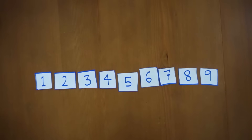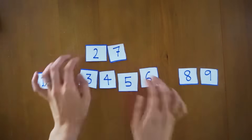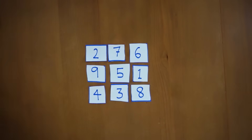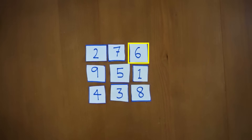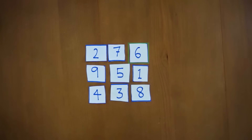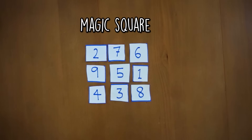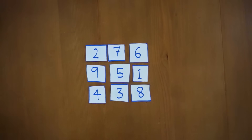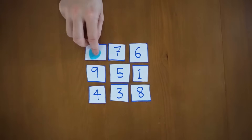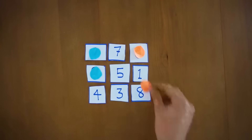But what if we reframe the game? Instead of lining up the numbers in a line, let's arrange them in a square. These numbers are arranged in a very specific order — every triplet adds to 15. 2 plus 7 plus 6 is 15. 6 plus 5 plus 4 is 15. 6 plus 1 plus 8 is 15. This is called a magic square, where every triplet adds to the same number. Now how would you try to win the game? It seems more obvious now. You would try to select three numbers which make a triplet, and block your opponent from doing the same thing.